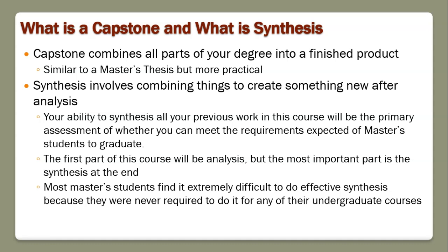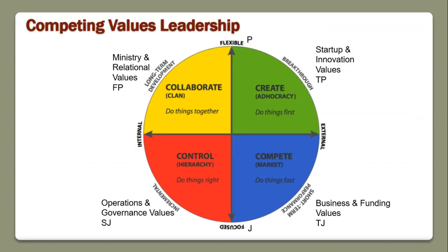One of the tools we're going to use is something called competing values leadership, which provides a master framework for this course. It's a two-by-two grid where each of the four quadrants — the diagonals — compete with each other. For example, you can have startup and innovation values, which the framework calls 'create,' and often if you're very entrepreneurial, you're not as strong in operations, accounting, or governance. Then there are ministry and relational values — your program people versus your fundraising people. If you're going to be a good manager, you need to be able to operate in all four quadrants, and a good strategic plan needs to address all four as well.